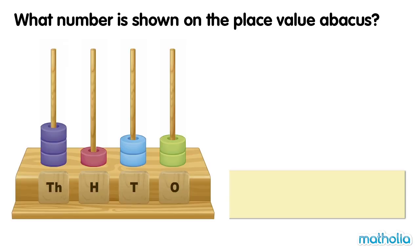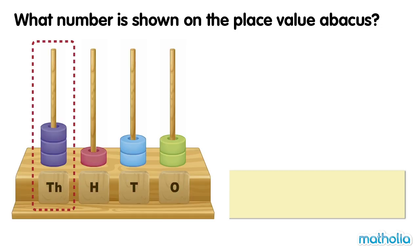What number is shown on the place value abacus? Let's find the value of the beads in each place. In the thousands place, there are three beads. The beads have a value of three thousand.